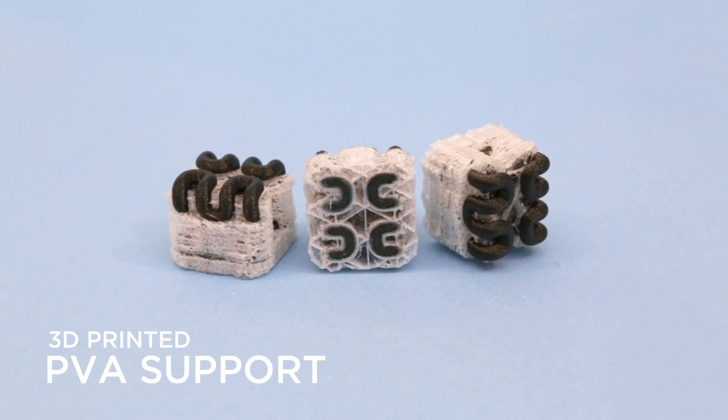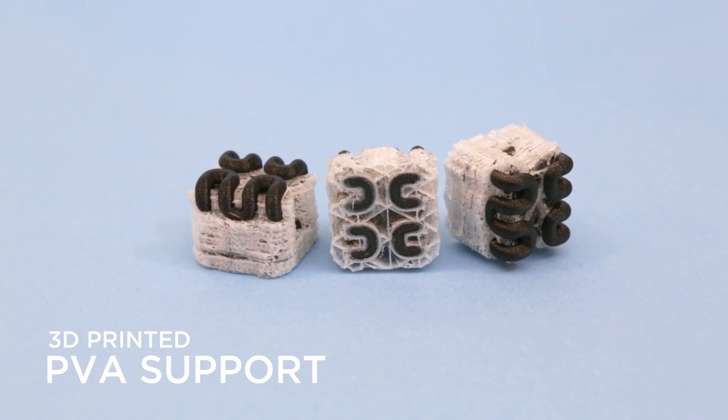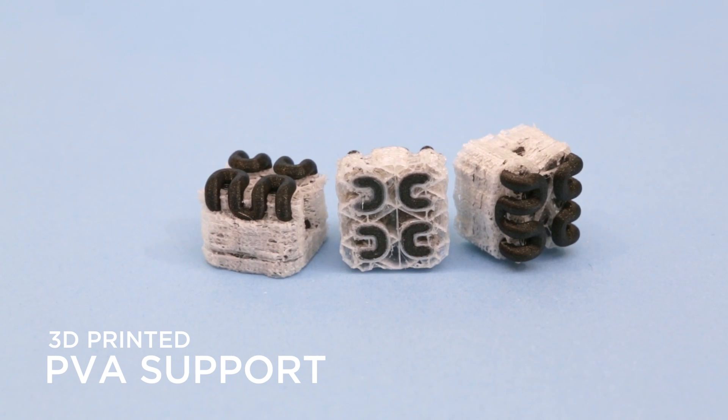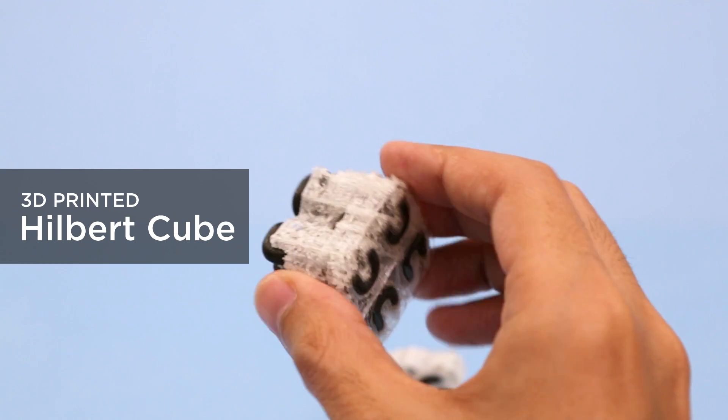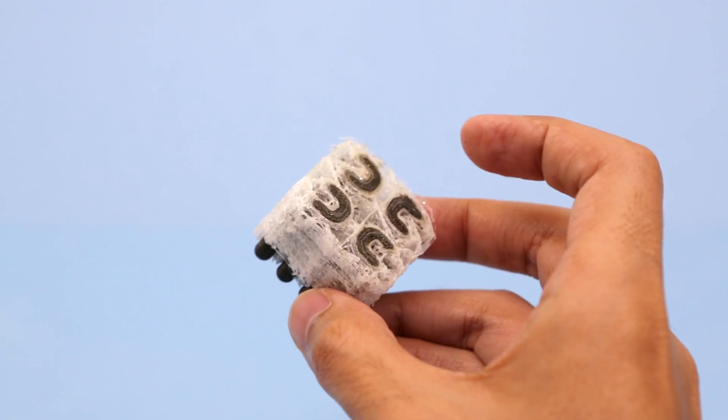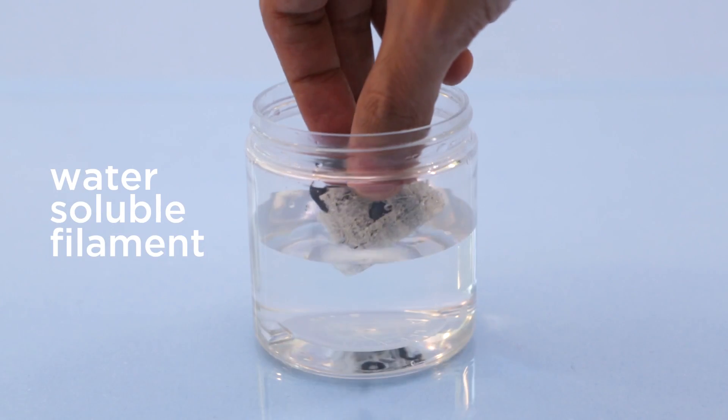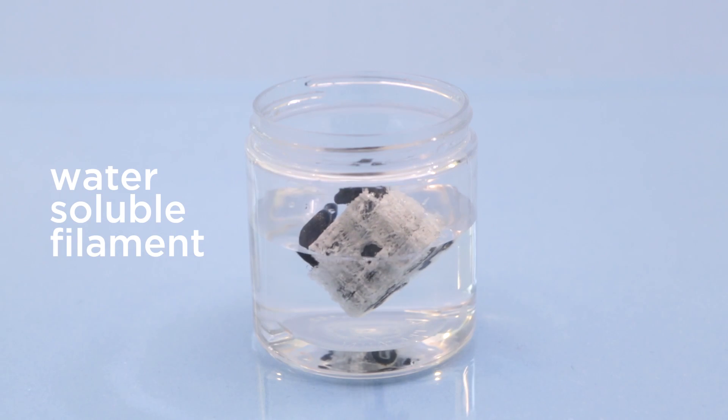So you already know PVA filament is used for 3D printing support structures with complex geometry. This Hilbert cube is a great example that is dual extruded in PLA and uses PVA for the supports. The support material dissolves in water and can take many hours to fully dissolve.